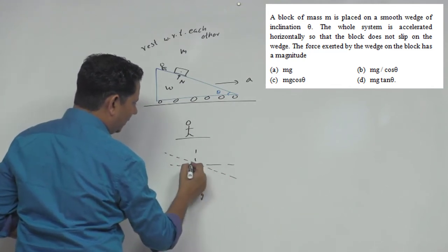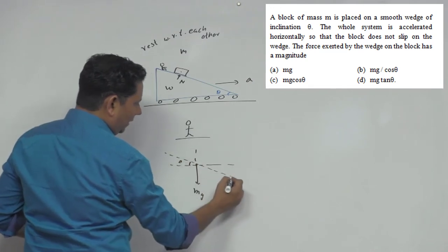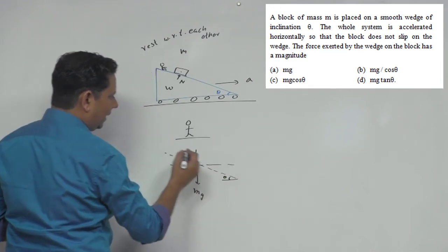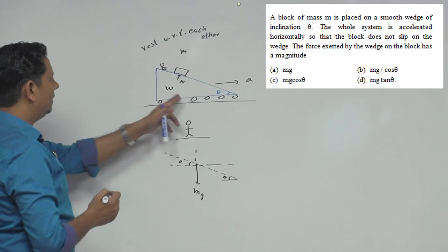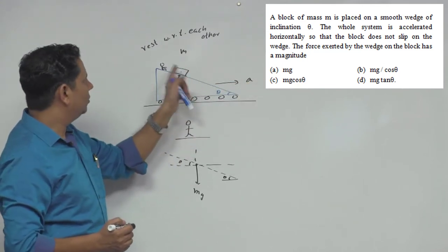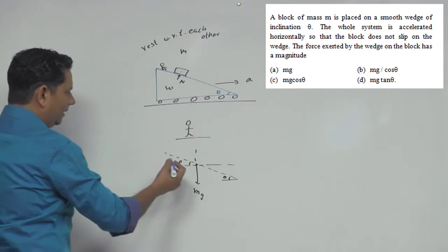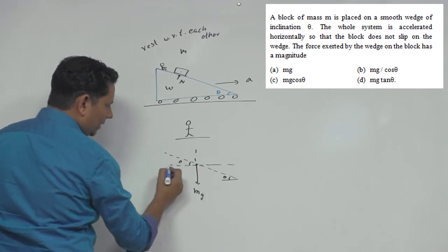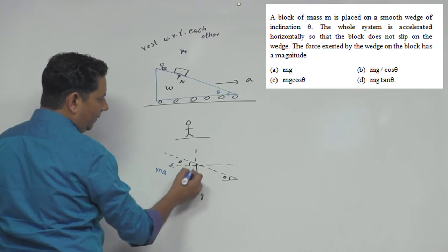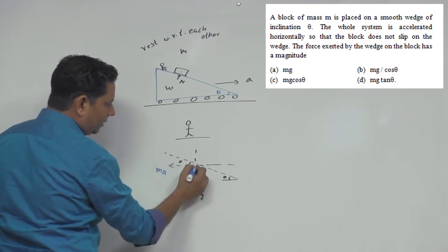The incline plane is at an angle theta. Here is the theta angle. From the ground frame, because there is acceleration, there will be a pseudo force which is MA acting in the horizontal direction, and the normal force acts perpendicular.